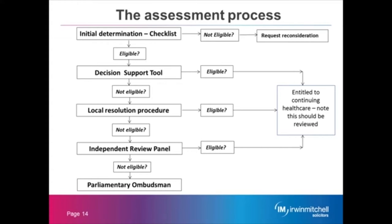The checklist is a general assessment of the individual's health and care needs across the following domains: behaviour, cognition, psychological needs, communication, mobility, nutrition, continence, skin, breathing, medication, and altered states of consciousness — for example, if somebody suffers with epilepsy. The assessment will also look at any other significant care needs that don't easily fit into those categories. If the checklist indicates that a person may have needs in those areas, this will trigger the full assessment — the decision support tool — to determine the extent of those needs. The initial screening can be bypassed if an individual's needs are deteriorating rapidly and a quick determination is required, for example at end of life.